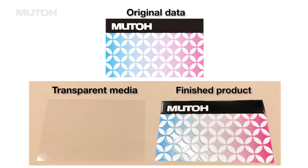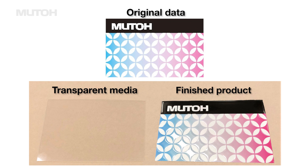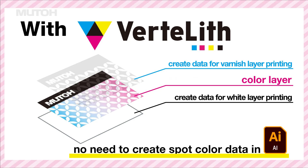This time, we use this data to print three layers of white, color, and varnish on a transparent media like this. Normally, white and varnish spot color data must be created in advance, but the Vertlith RIP software's functionality enables multi-layer printing without the spot color data.